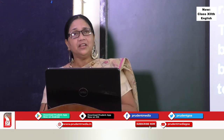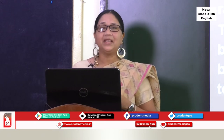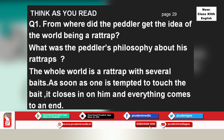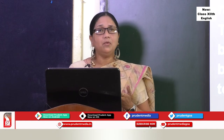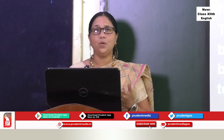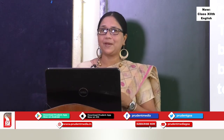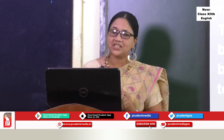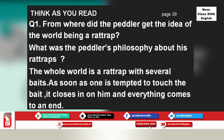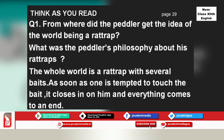The first textbook question appears on page 29: 'From where did the peddler get the idea that the world is a rat trap?' — He arrived at this idea during one of his lonely ploddings, while thinking of nothing else but his traps. Another question: 'What was the peddler's philosophy about his rat traps?' — The world is compared to a rat trap offering several baits; the moment people are tempted to touch the bait, it closes on them and everything comes to an end.